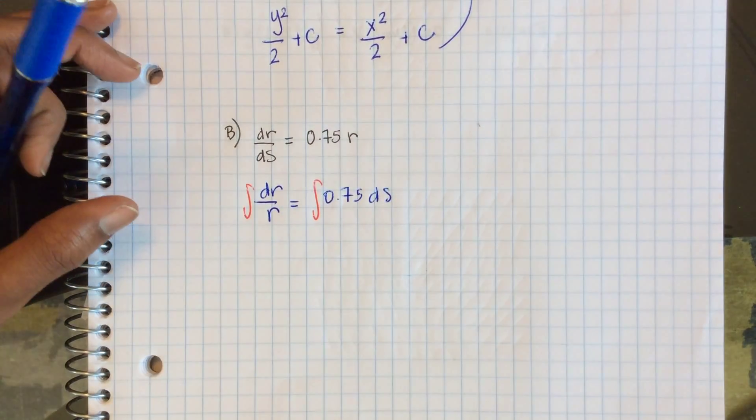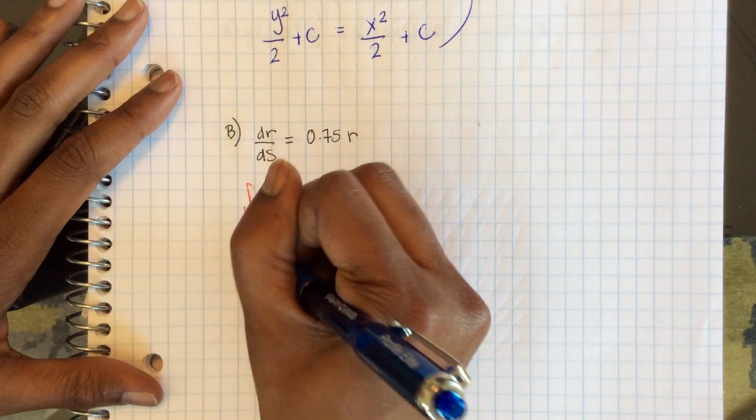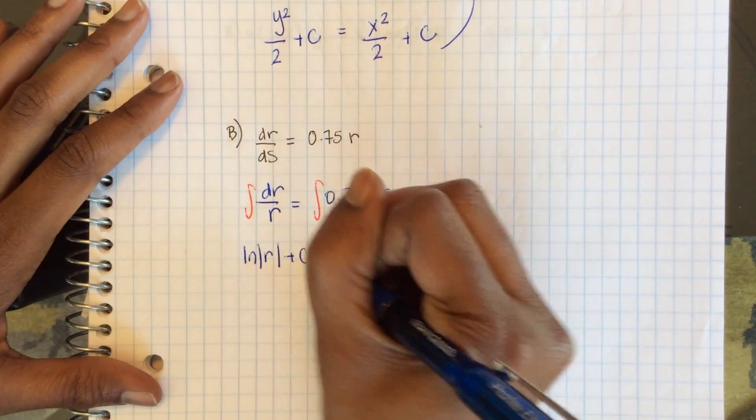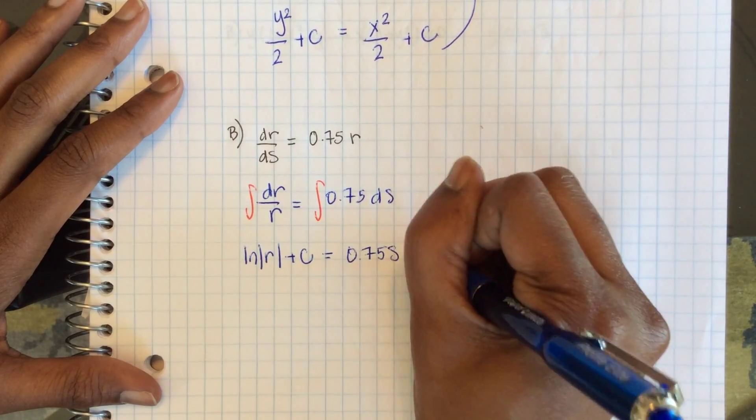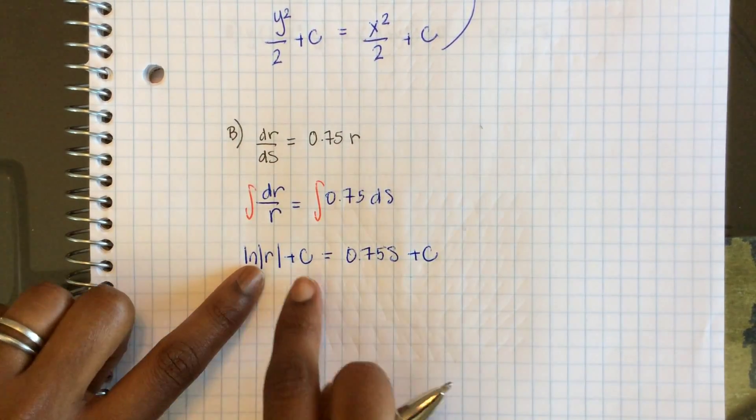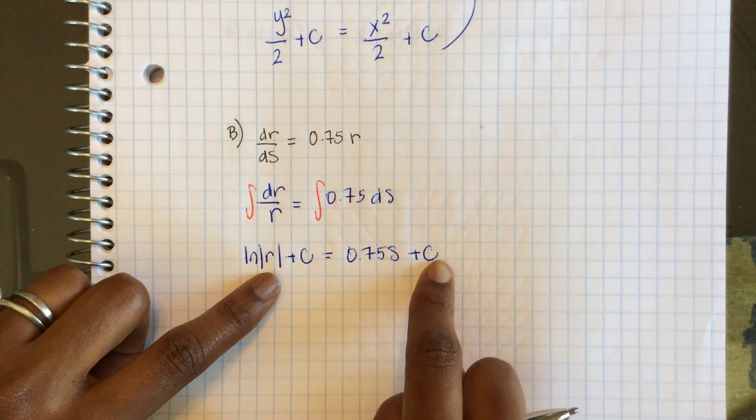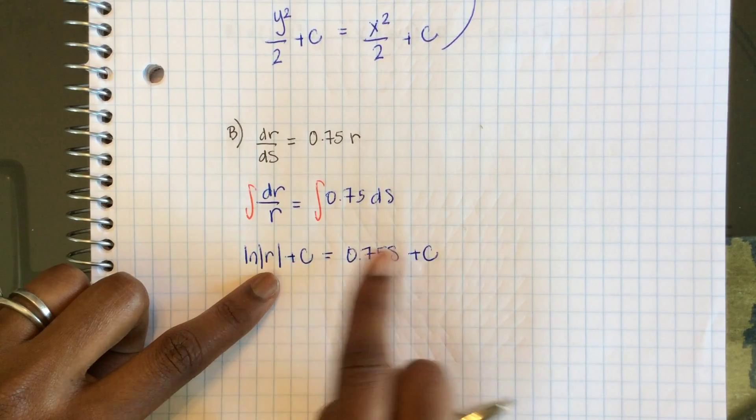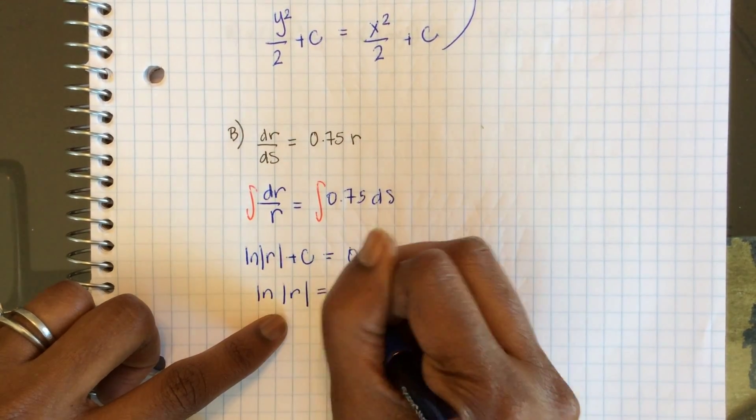Integrating dr over r, it's ln absolute value of r plus c equals 0.75s plus c. So let me solve for r. The first thing I'm going to do is subtract this c to this side. A constant minus a constant is still a constant.